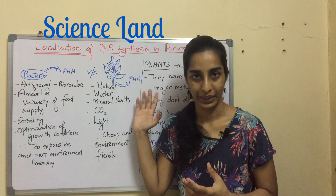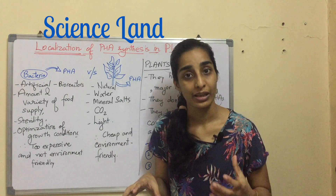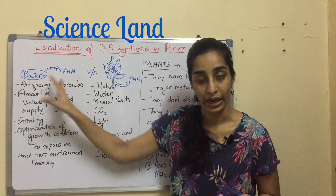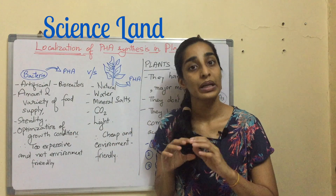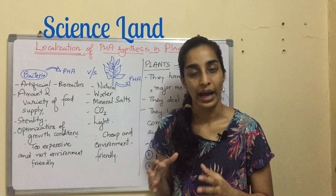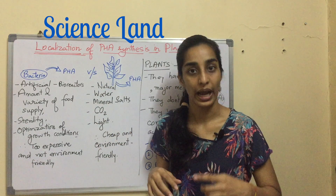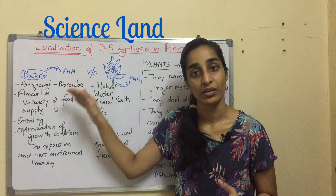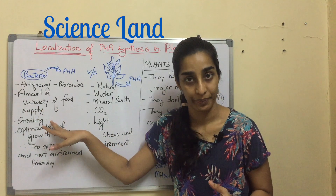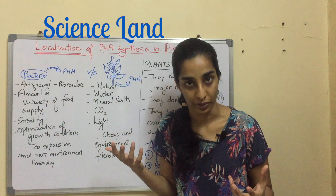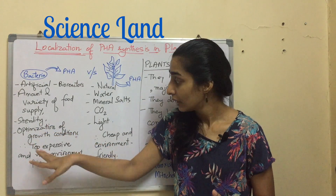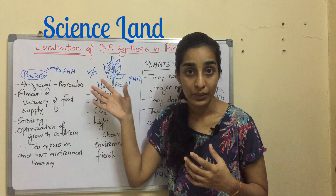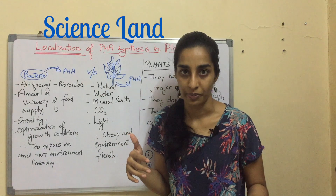Let's consider two situations: bacteria producing PHA versus a plant producing PHA. My intention is to obtain PHA at mass level to make profit. For bacteria, I would take specialized bacteria and create an artificial system called a bioreactor. Apart from this, there are factors like food supply, sterility, and optimization of growth conditions that I need to take care of.